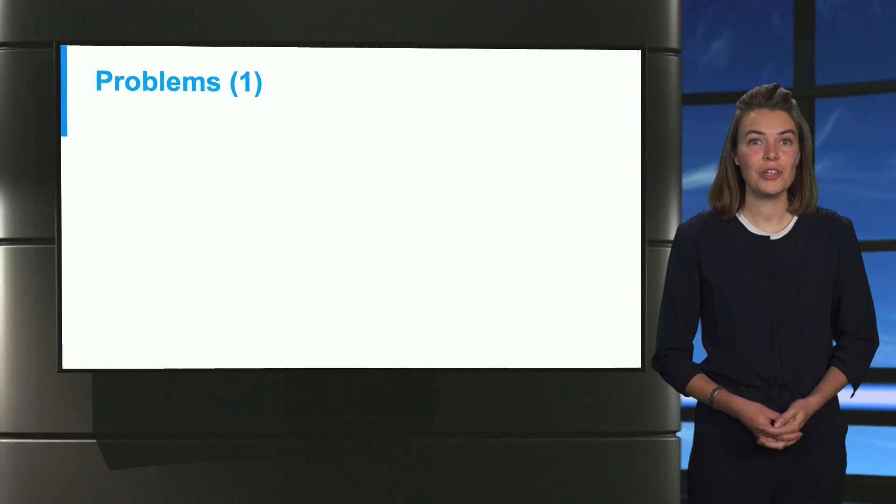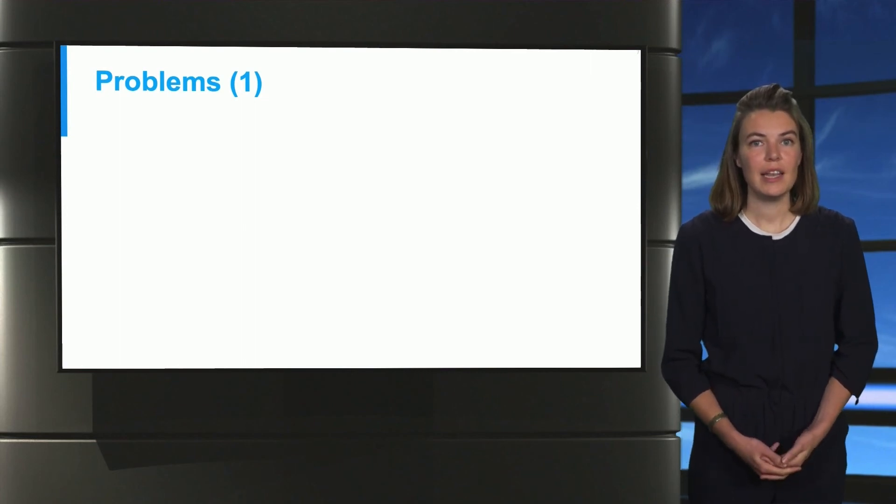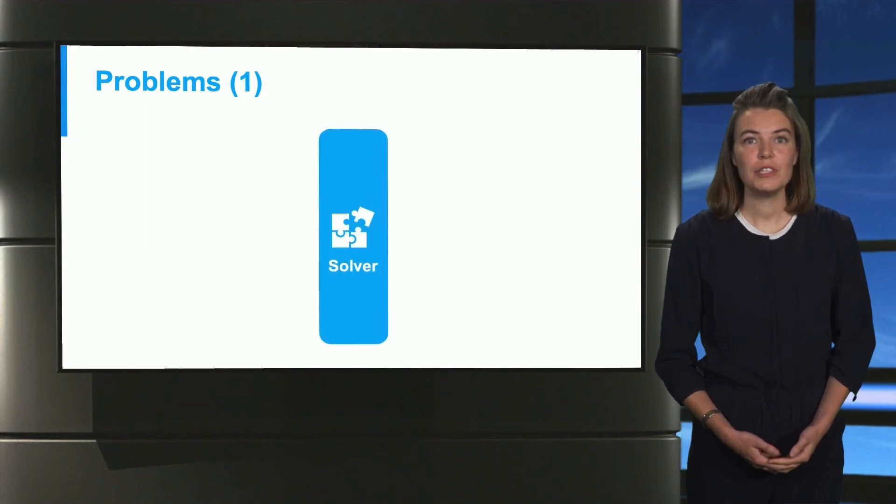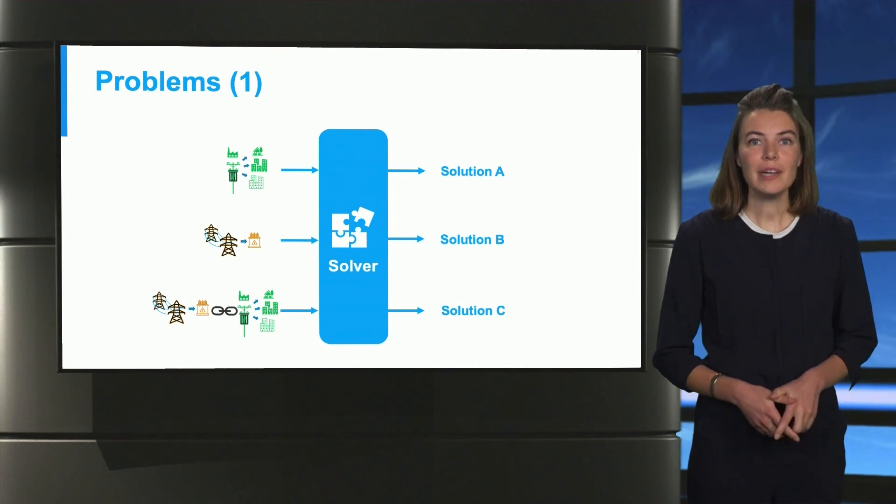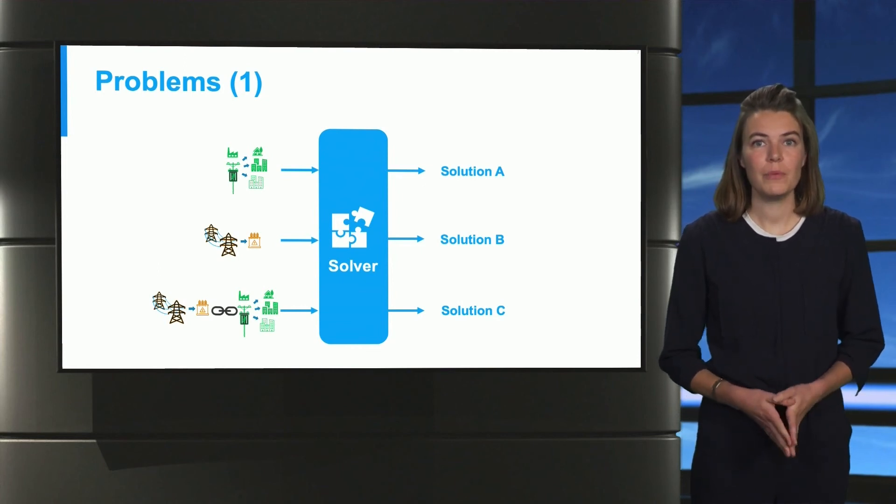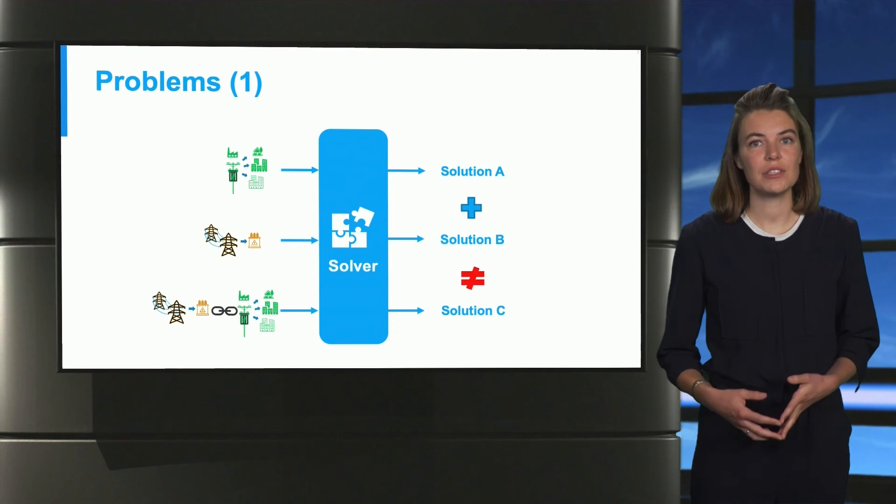There are certain problems associated with solving coupled transmission and distribution networks. Let us analyze those. Firstly, if we solve both networks separately, we get a unique solution for the distribution network, the transmission network, and the coupled network. Remember that it is not a linear problem, which means that we cannot add the results together. Instead, we have to do that in an integrated way.